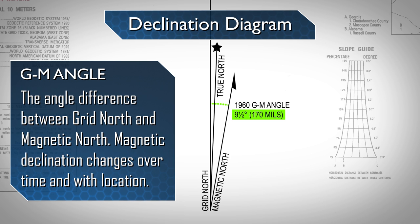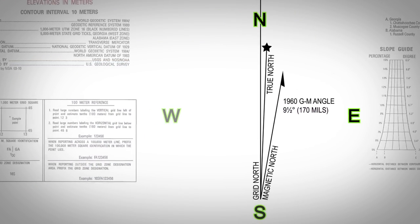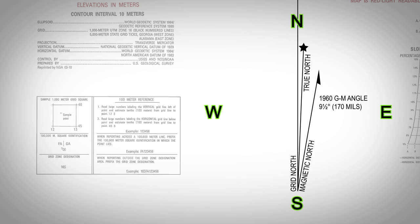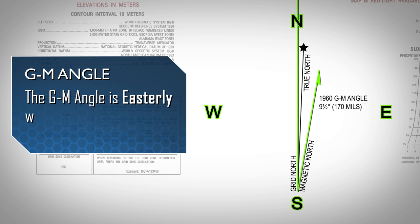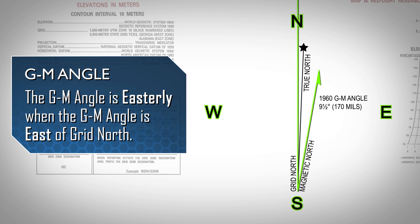In this example, the grid magnetic, or GM angle, found in the declination diagram is 9.5 degrees, or 170 mils. Next, determine whether the GM angle is easterly or westerly. Refer to the map's declination diagram and look at the position of the GM angle relative to the line labeled grid north. The GM angle is westerly when it is west of grid north. The GM angle is easterly when it is east of grid north. This example's declination diagram indicates the GM angle is easterly.